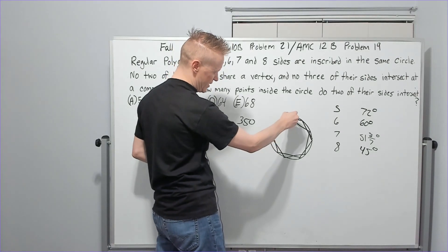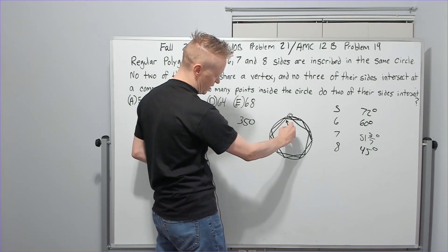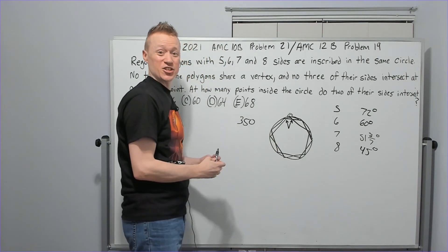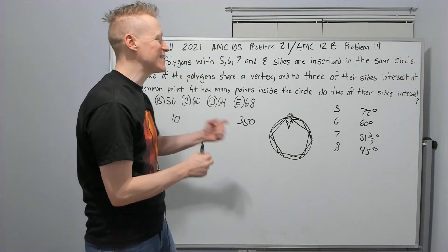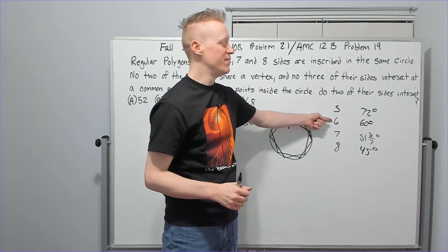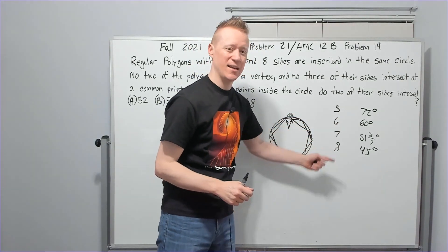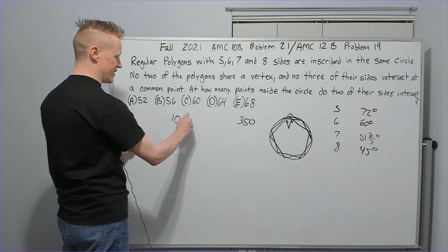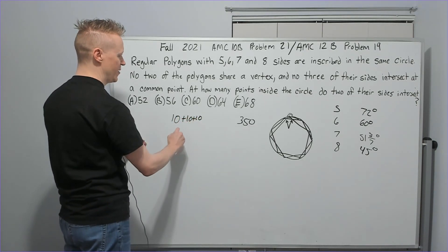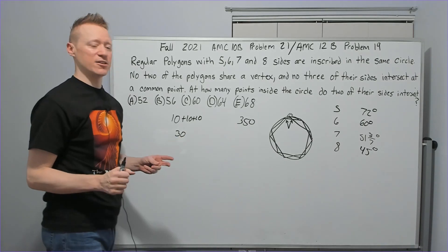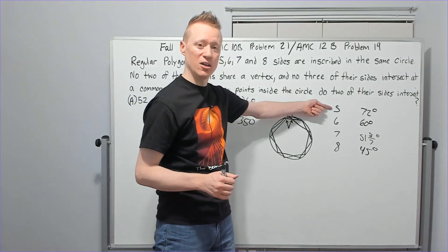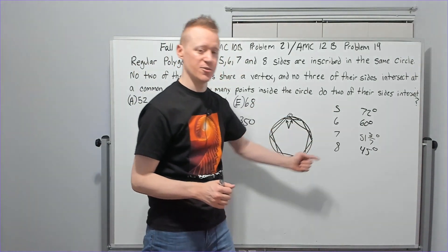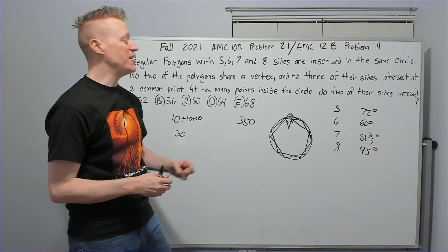And the same thing will be true here as it was with here. So every pentagon vertex—follow along—every pentagon vertex is going to have 1, 2 points of intersection. It's going to cross over a side of the hexagon. The same thing is true of the septagon, the same thing is true of the octagon. You're going to get 10 plus 10 plus 10, you're going to get 30 points of intersection that just involve the pentagon with these three.